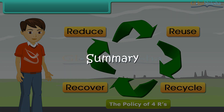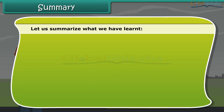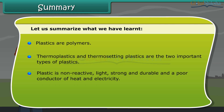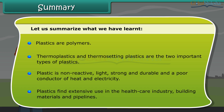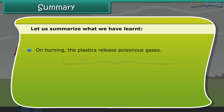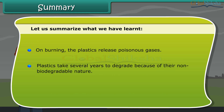Let us summarize what we have learnt. Plastics are polymers. Thermoplastics and thermosetting plastics are the two important types of plastics. Plastic is non-reactive, light, strong and durable, and a poor conductor of heat and electricity. Plastics find extensive use in the healthcare industry, building materials and pipelines. On burning, plastics release poisonous gases. Plastics take several years to degrade because of their non-biodegradable nature. Adopt the 4 R's: reduce, reuse, recycle and recover.